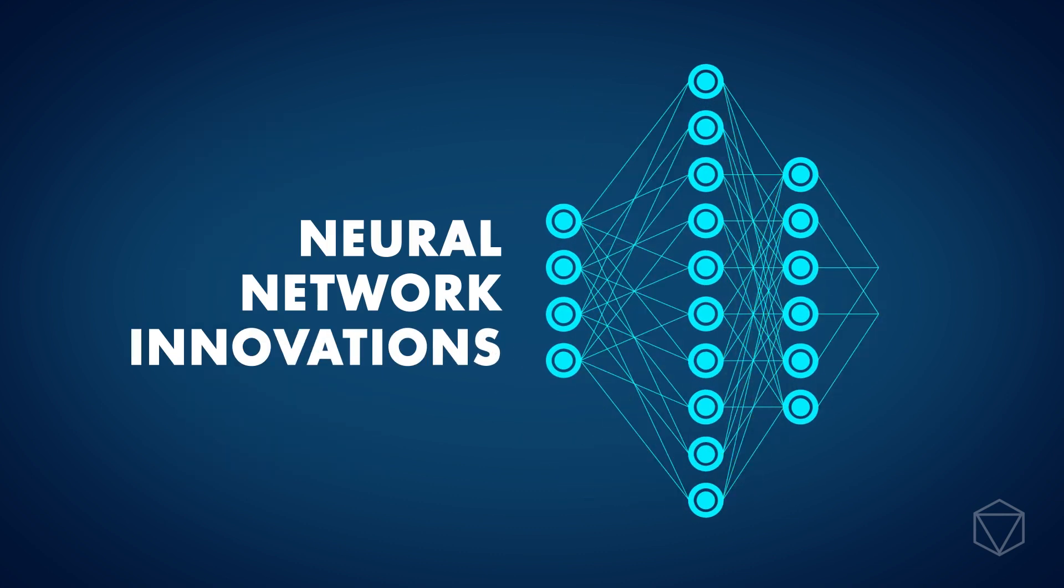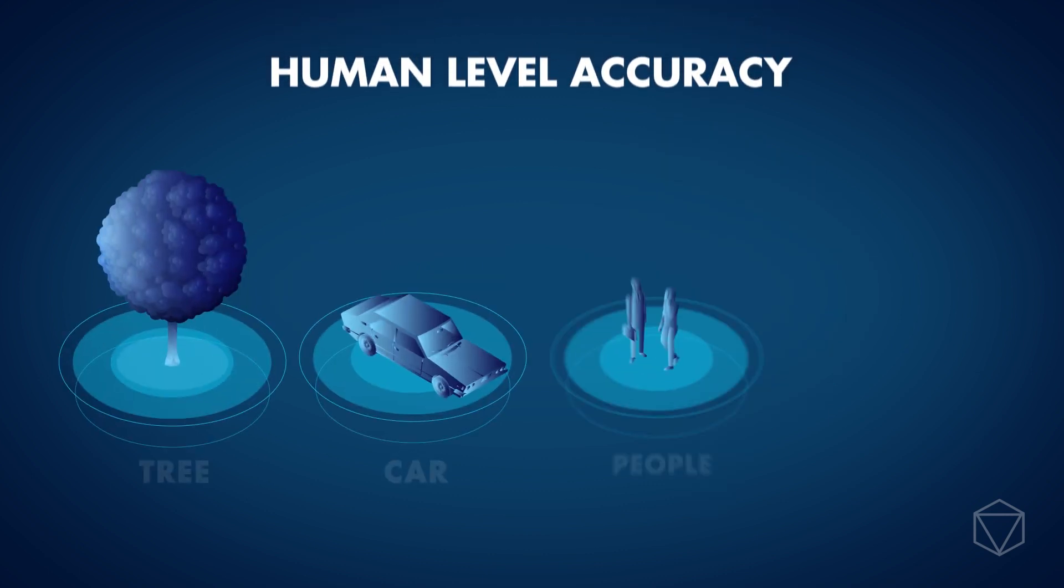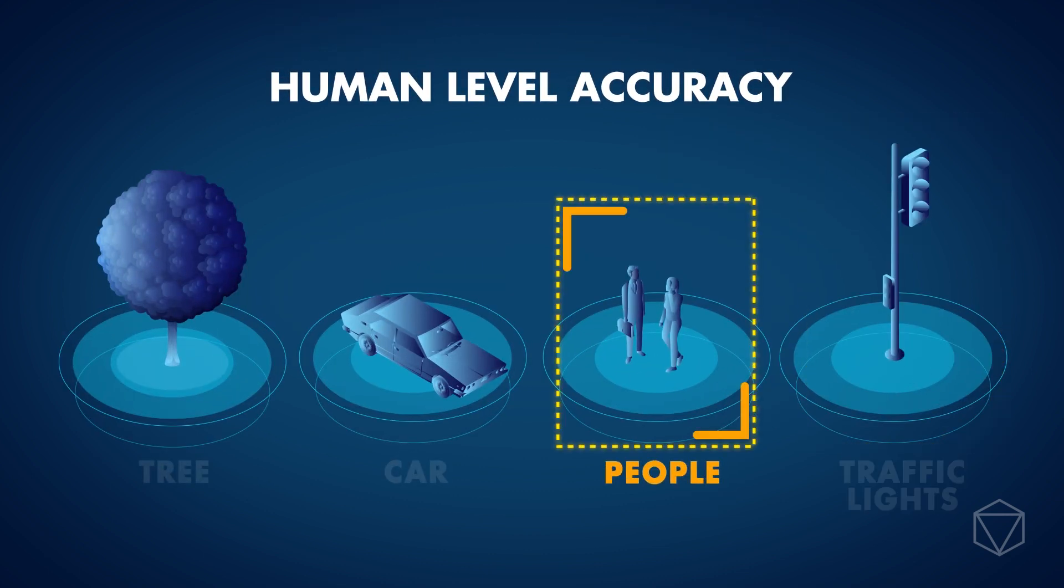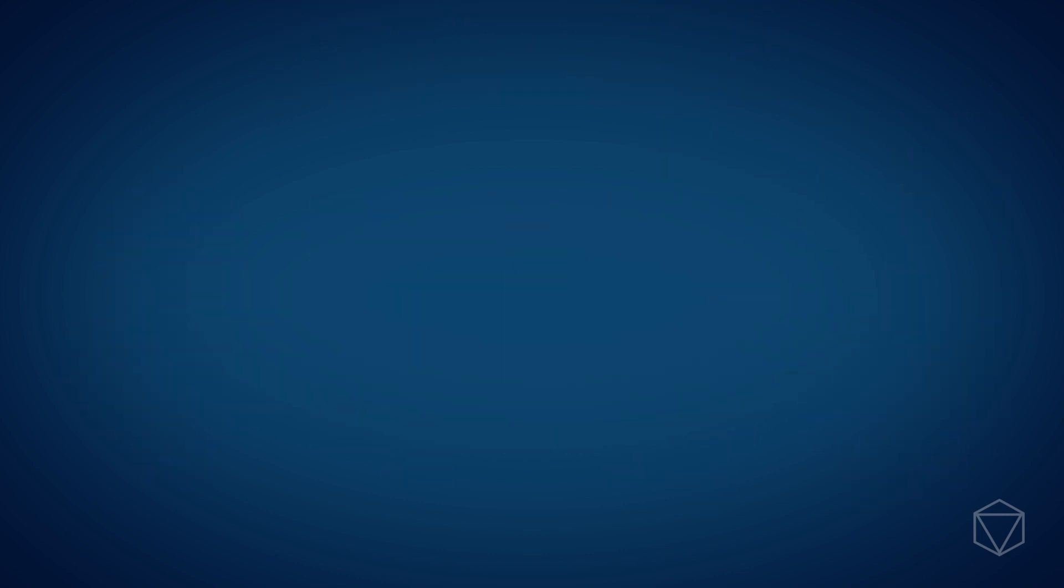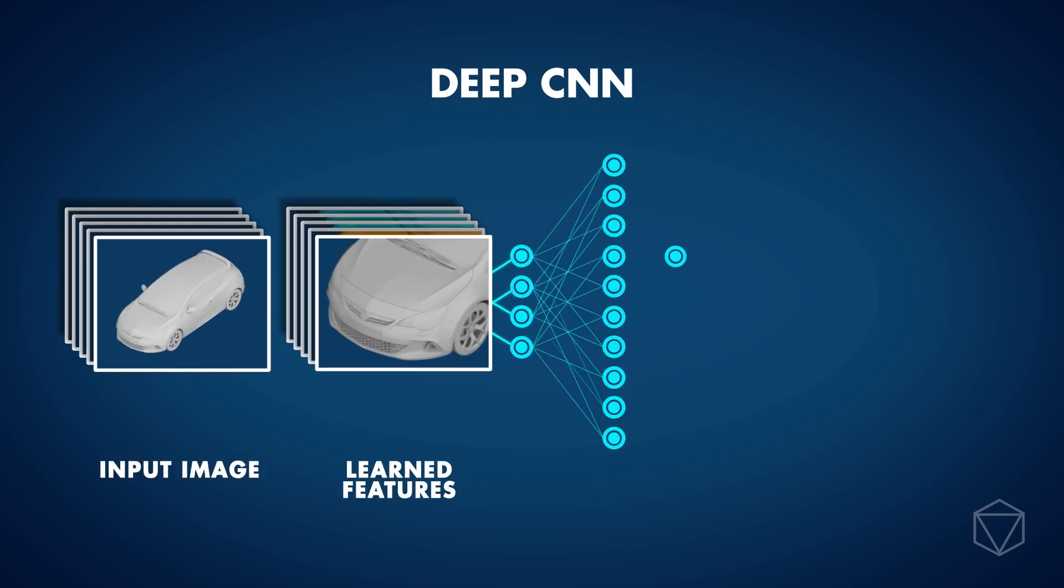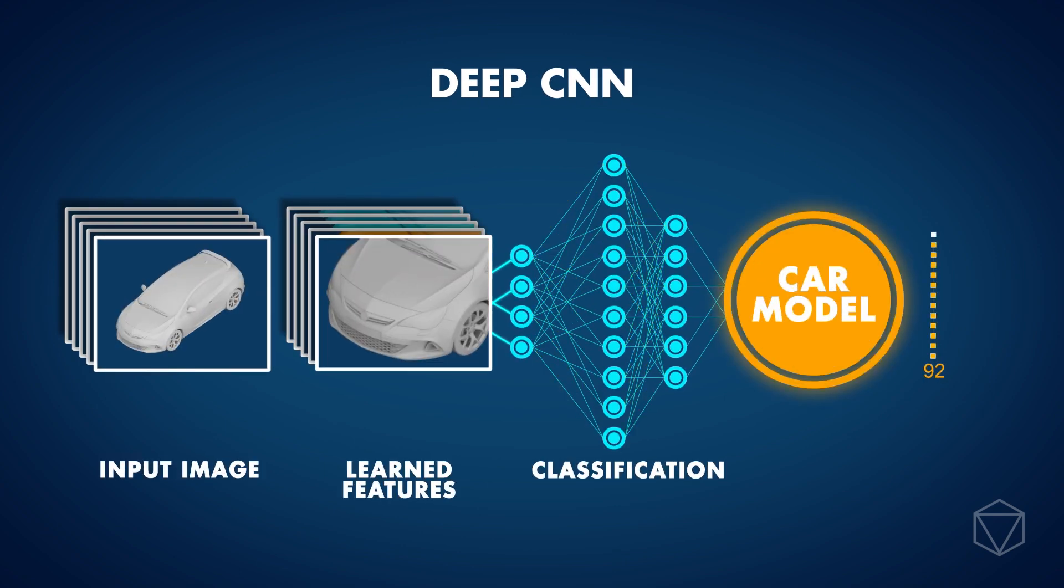In the past few years, additional neural network innovations have resulted in AI that can perform image classification tasks with human level accuracy. Building on such developments we were able to train a deep CNN to classify cars by their model.